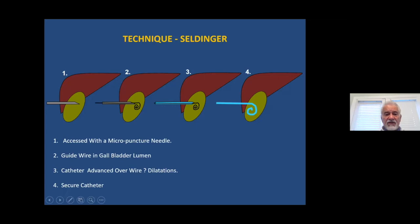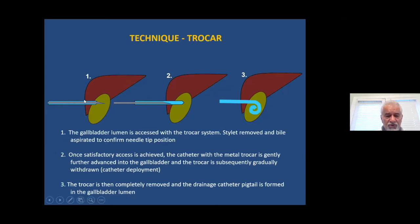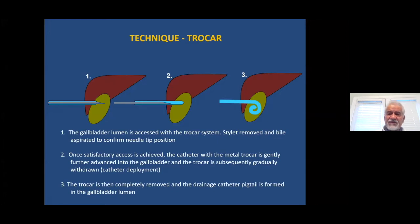In the trocar technique, the catheter is over the needle. You pass the whole assembly — catheter and needle — across the skin into the gallbladder. Once inside, you push the catheter over the needle, pull the needle out, and leave the catheter within the gallbladder for drainage. This technique can be used for any body cavity where fluid drainage is necessary. A superficial abscess cavity is perfectly suited for this kind of trocar technique.